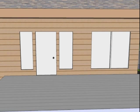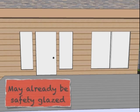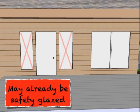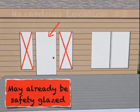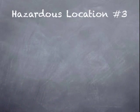Another situation may be that when building a deck, perhaps the existing glazing is already safety glazed. Like in this case, these windows are likely already tempered glass or safety glazed from their proximity to this door — that's another one of the hazardous locations, but we're not discussing that one today. So let's look at the hazardous location we are going to talk about and get into those details.